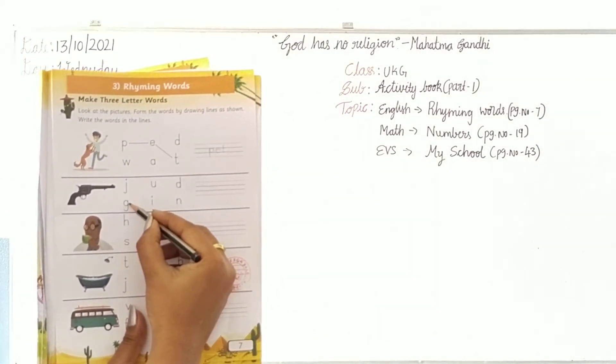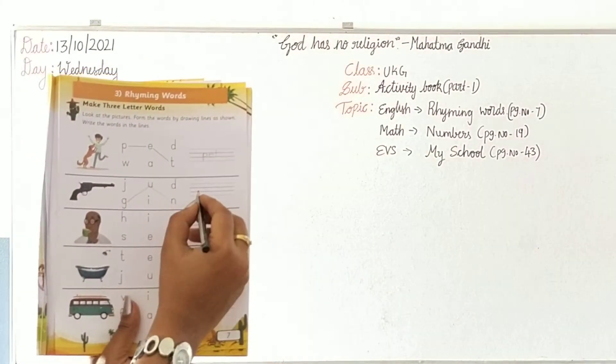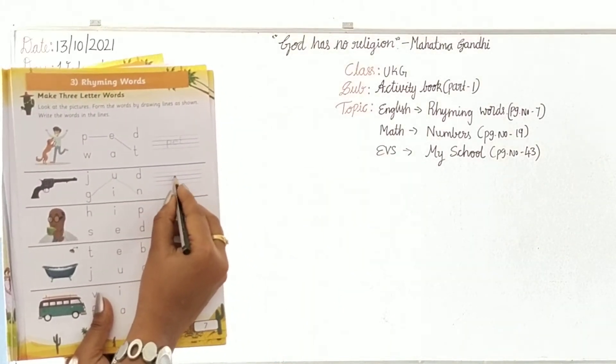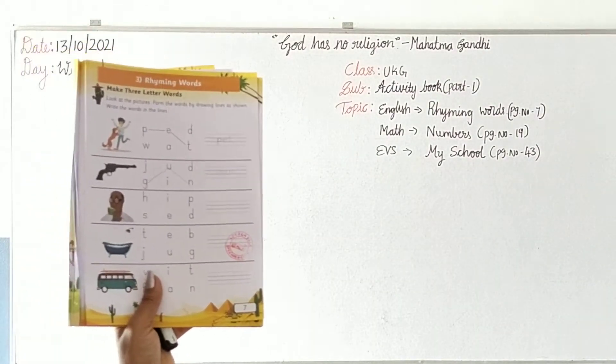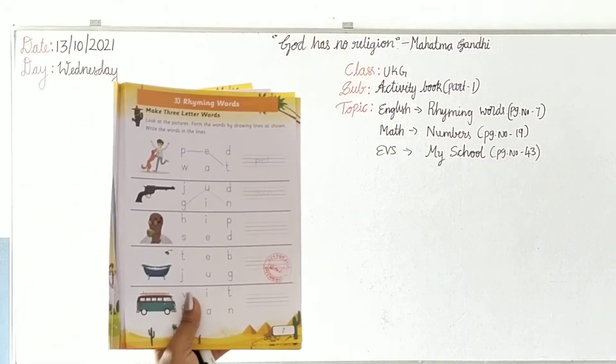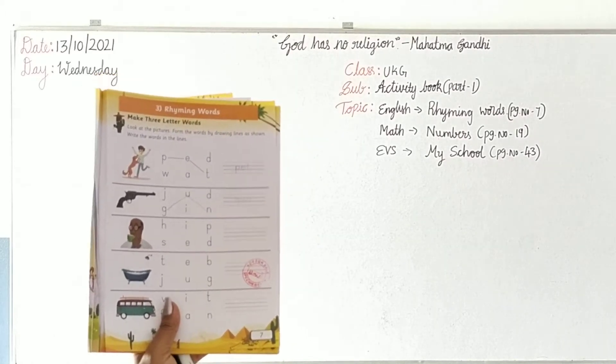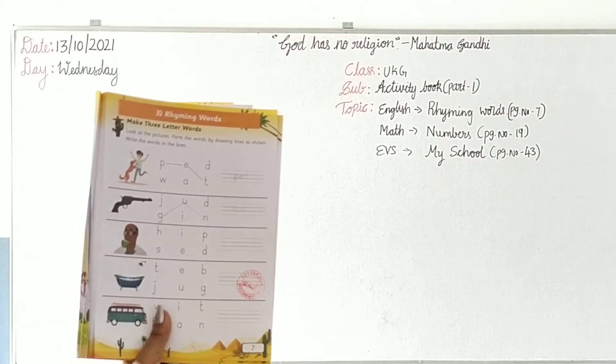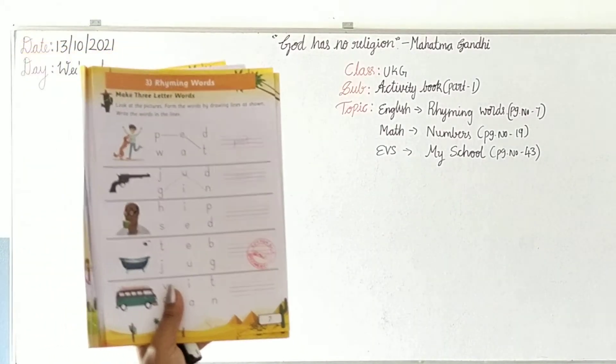G-U-N, gun. Write the word G-U-N. Next, what is he doing? He is drinking the coffee and tea. How are we drinking coffee or tea? Sip by sip, isn't it?